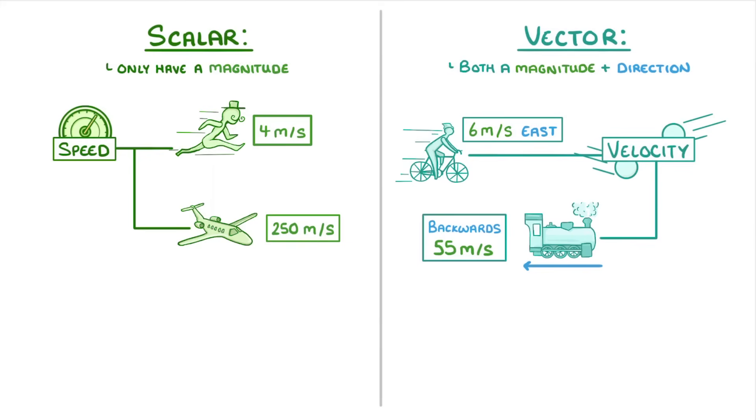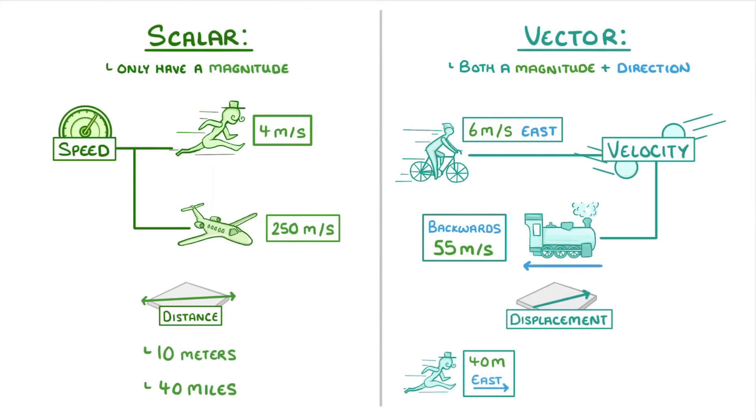Another pair of quantities you need to know are distance and displacement. Distance is a scalar as it only gives magnitude, like 10 meters or 40 miles. Displacement though is a vector as it has direction as well. For example, a person running 40 meters east, or a ball that falls 2 meters downwards.